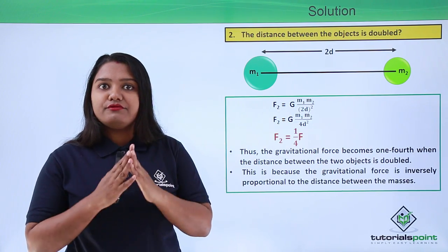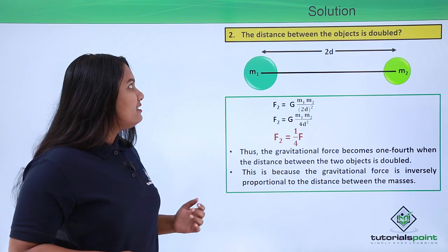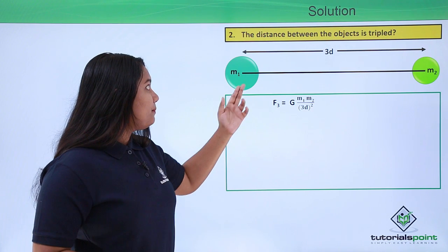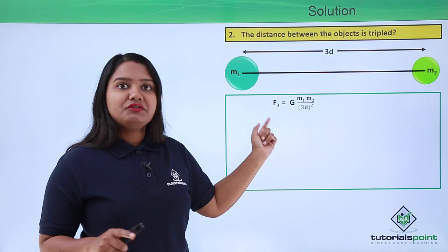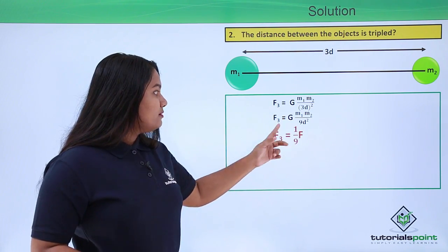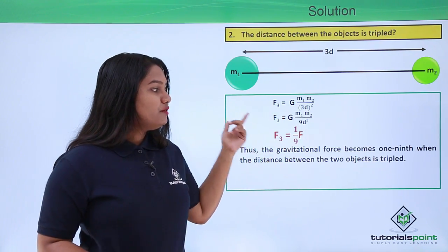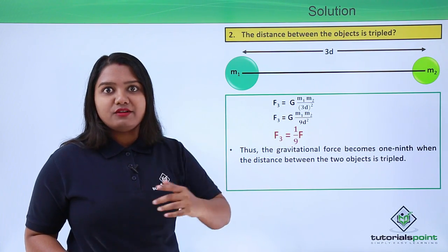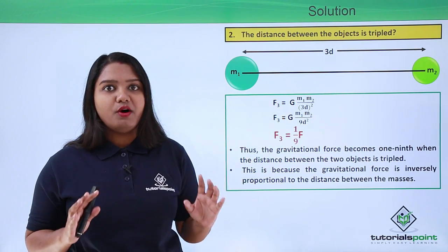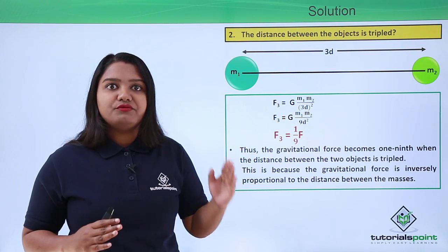This is because the gravitational force between the two bodies is inversely proportional to the square of the distance between them. Similarly, when the distance is tripled — it becomes 3D — then F3 equals G M1 M2 divided by 3D whole squared, which equals G M1 M2 divided by 9D squared. So F3 equals one-ninth F. The gravitational force becomes one-ninth when the distance is tripled, because the distance increased by a factor of 3, so the force reduces by a factor of 3 squared, that is 9.